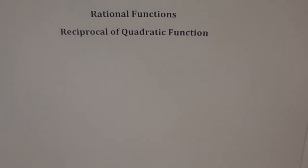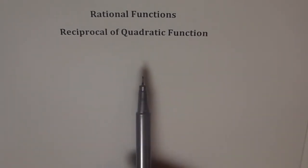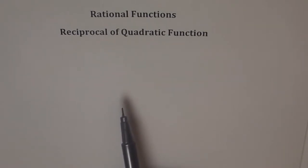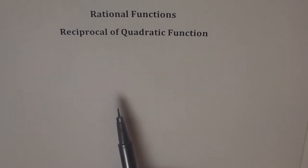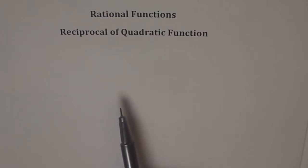Hello, now we will discuss the reciprocal of a quadratic function. You've done a lot of reciprocal functions by now and sketched them many times. Now, if you have a reciprocal of a quadratic function, will you always get vertical asymptotes? That's the first question. Will you always get a horizontal asymptote? Will you get x-intercepts or will you always get y-intercepts? Think about these things.